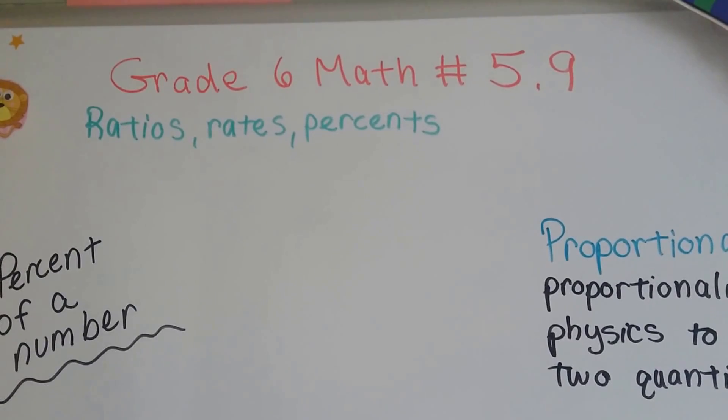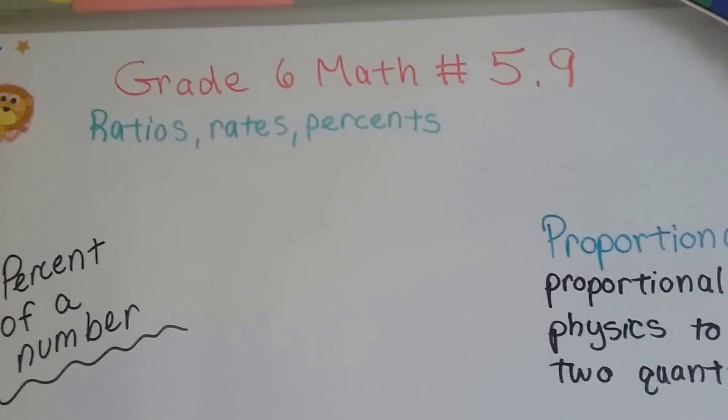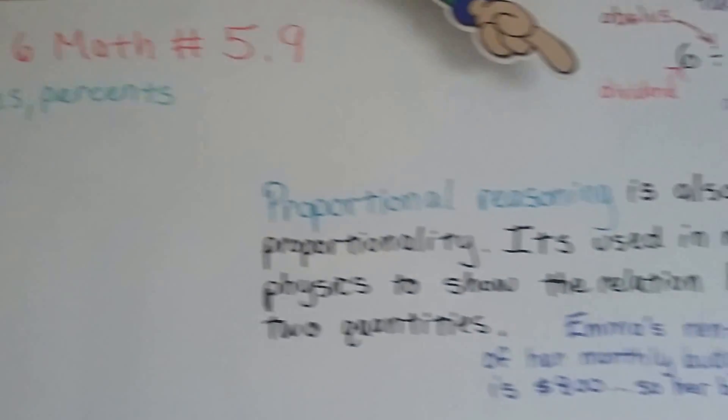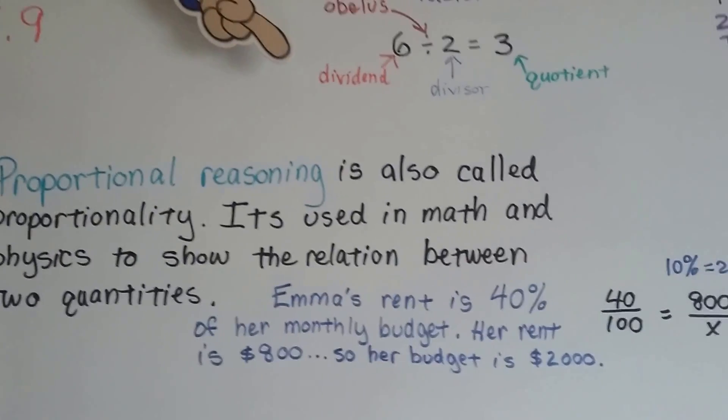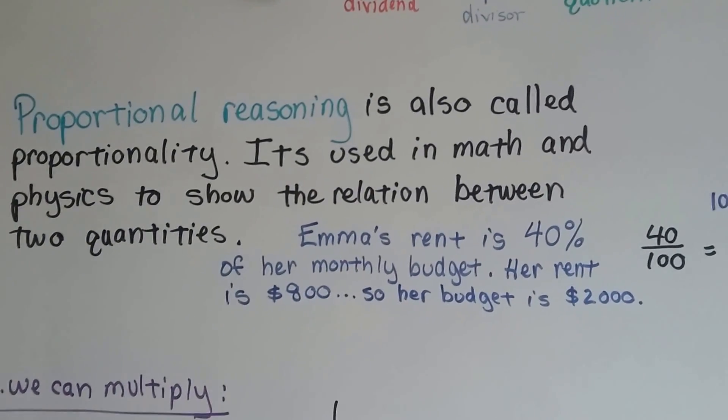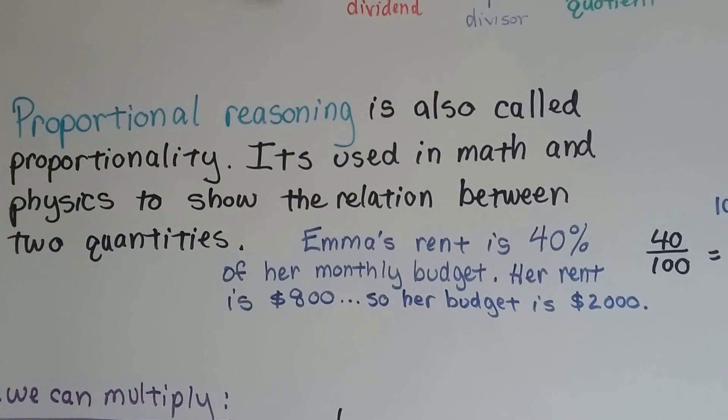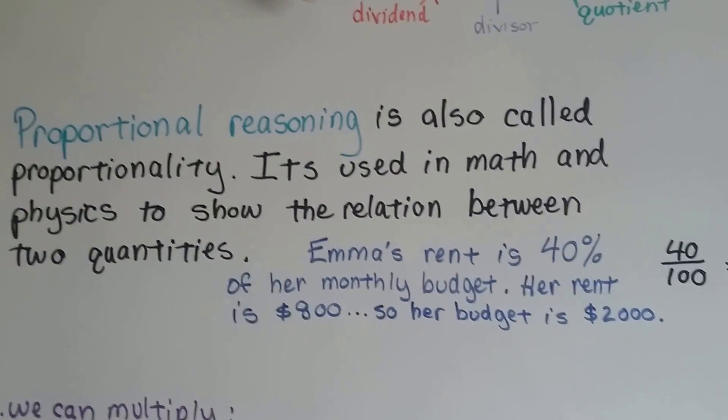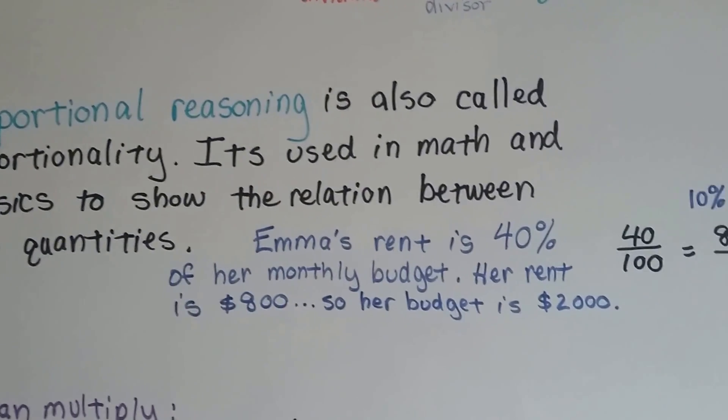Grade 6 math number 5.9, percent of a number. I'm going to help show you how to find the percent of a number. Proportional reasoning is also called proportionality. It's used in math and physics to show the relation between two quantities, and we can use this to help us find the percent of a number.